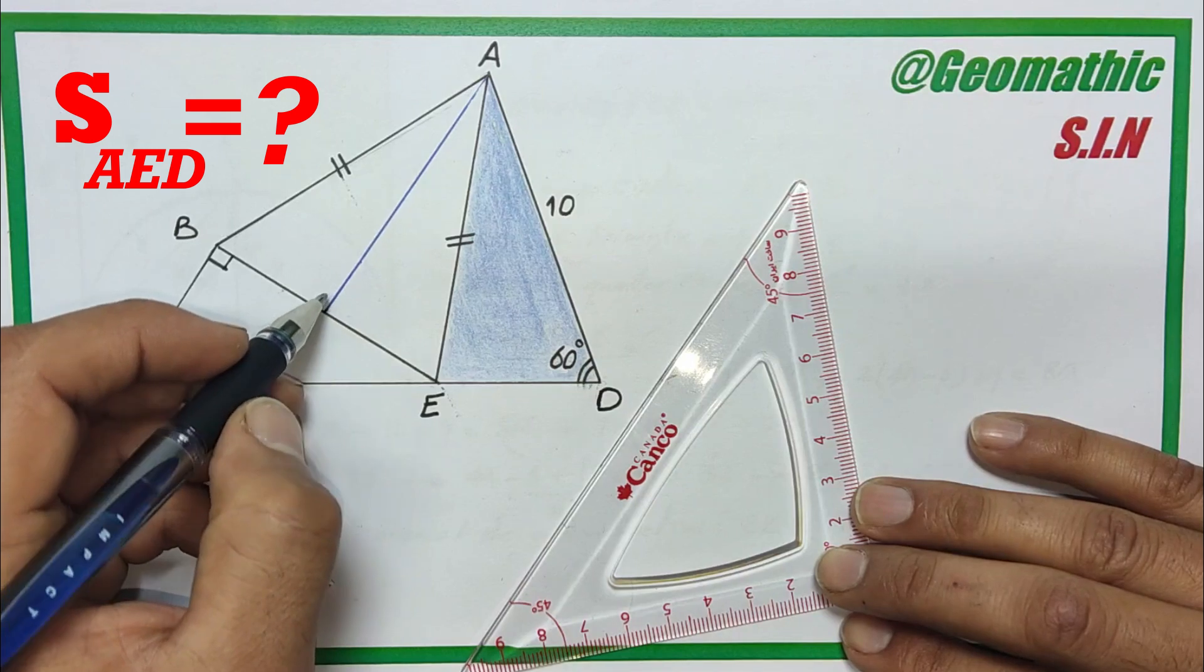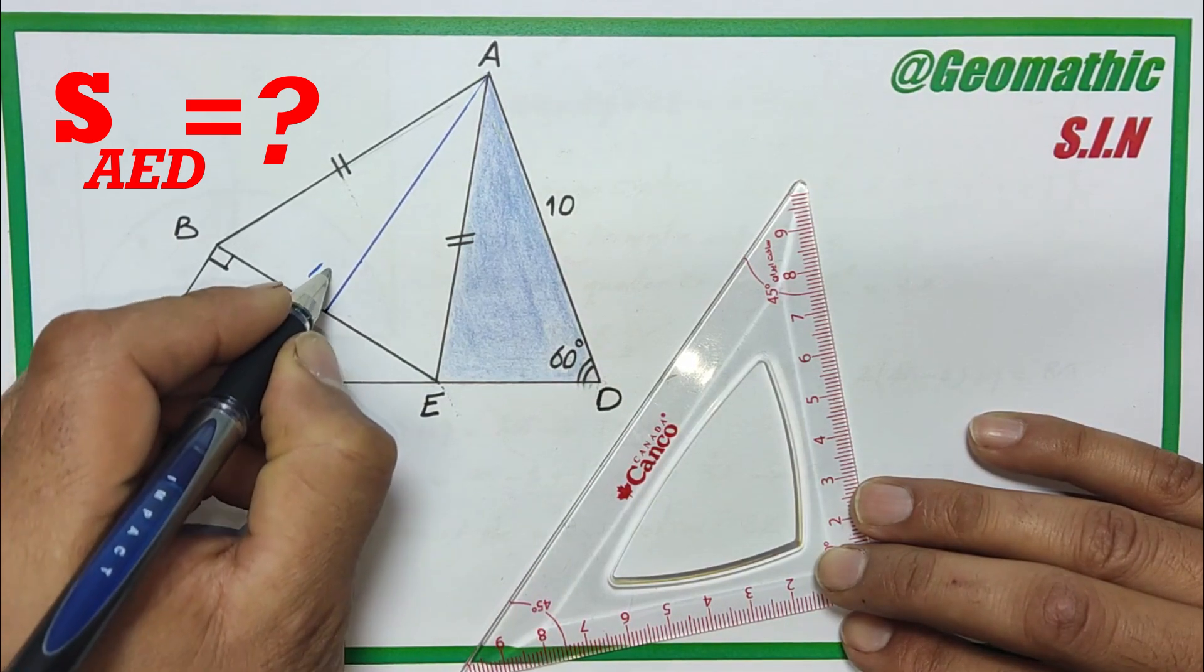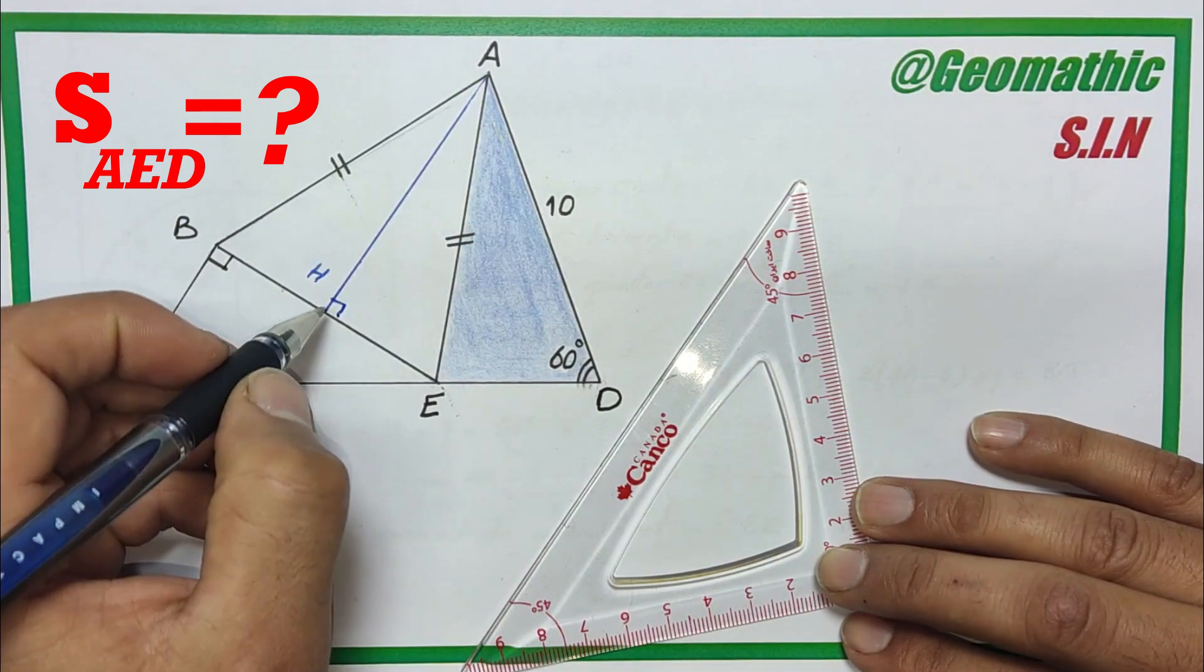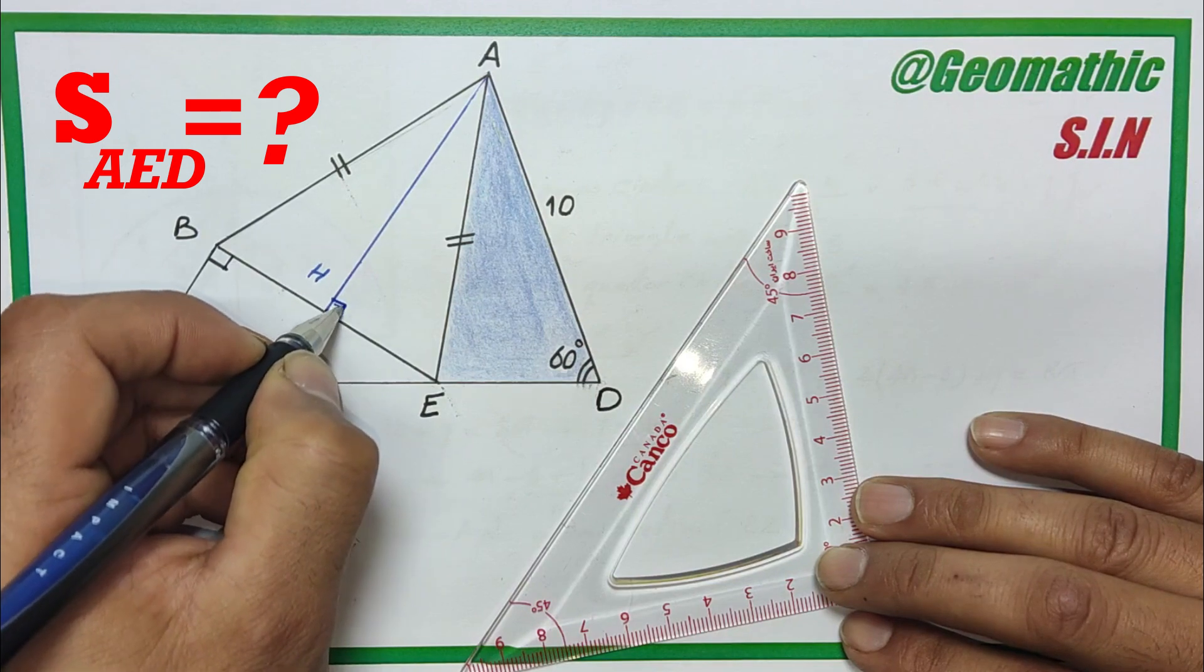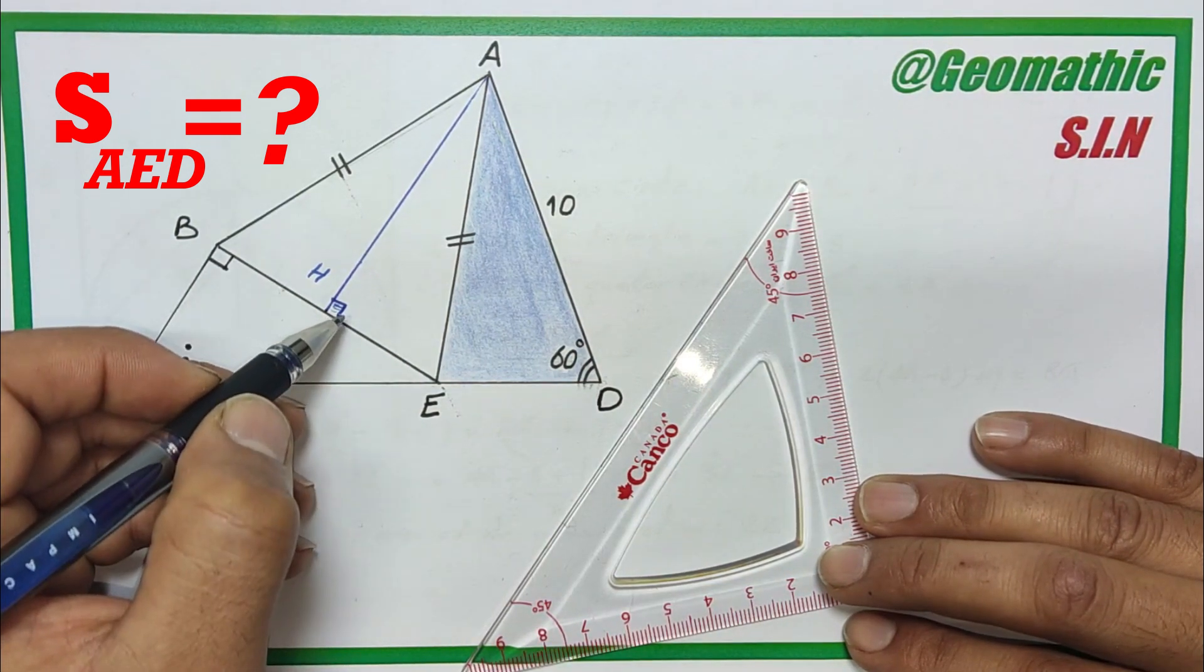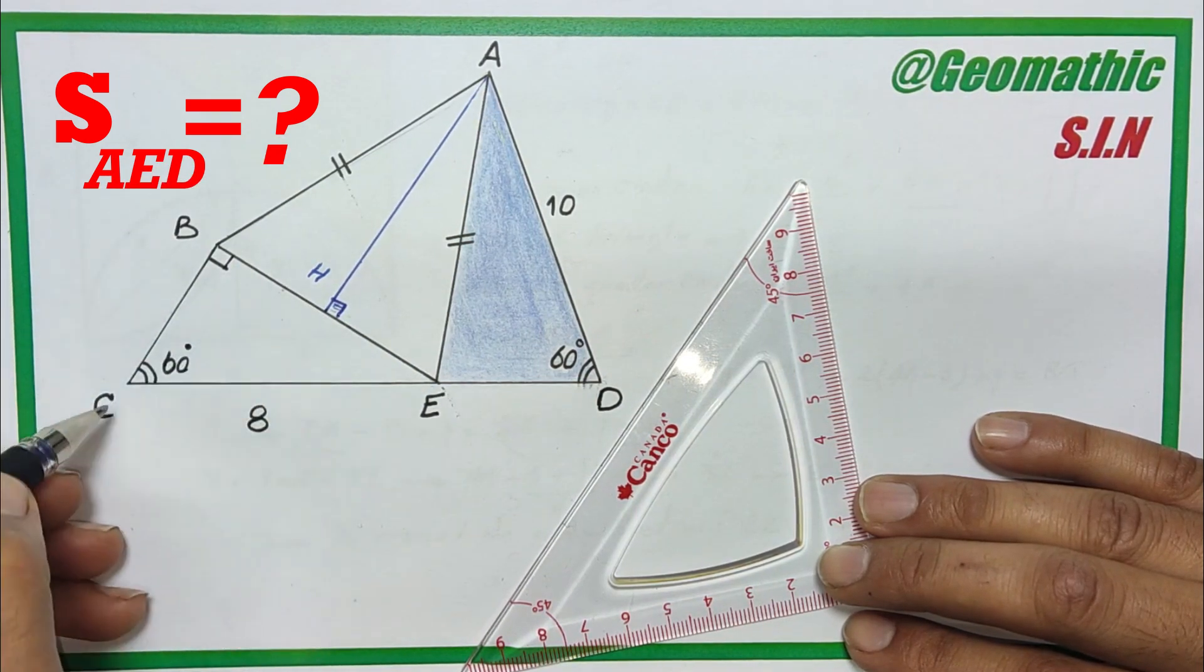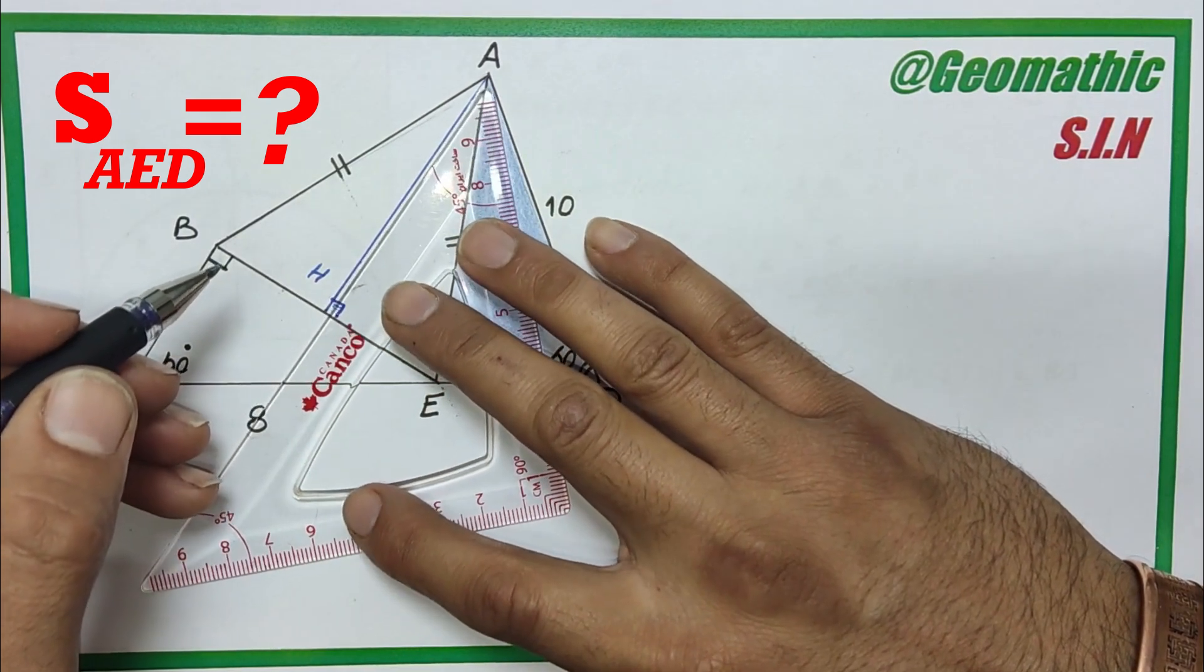And label the point where it meets side BE as H. As you know, the median, which is the altitude, makes a right angle. Now you see B and H are both right angles. If we extend the median AH until it meets the side CE like this...